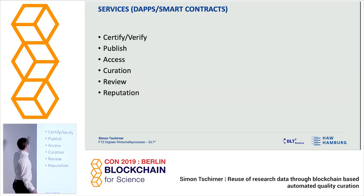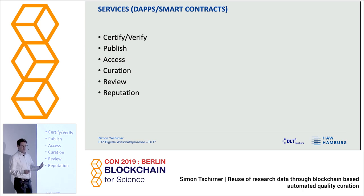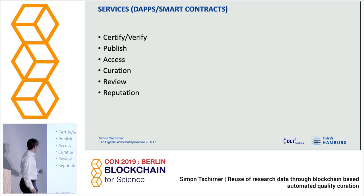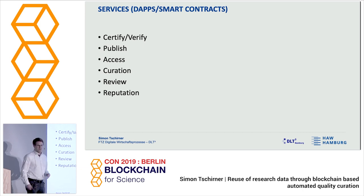We have these services as DApps: a certify-verify contract, one for publishing, one for access, curation — which is the quality control — and a review process. When you have public publications of research papers, the review is the quality control and reputation management. We haven't really implemented this review case, but Elena is working on these parts, so it fits very well together.